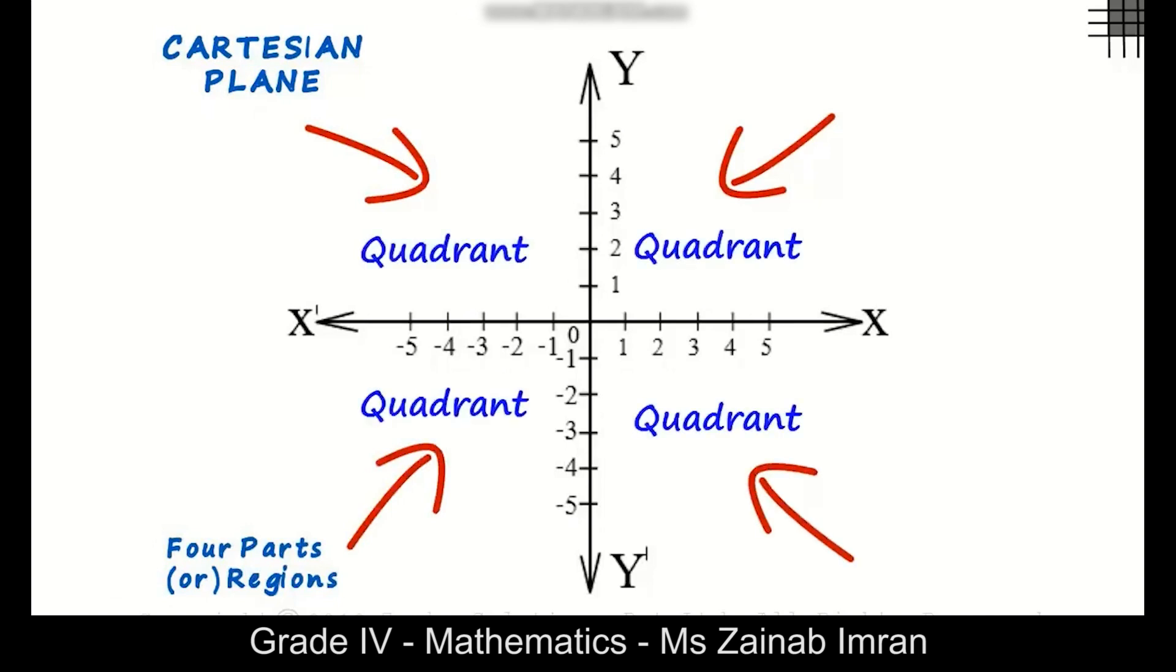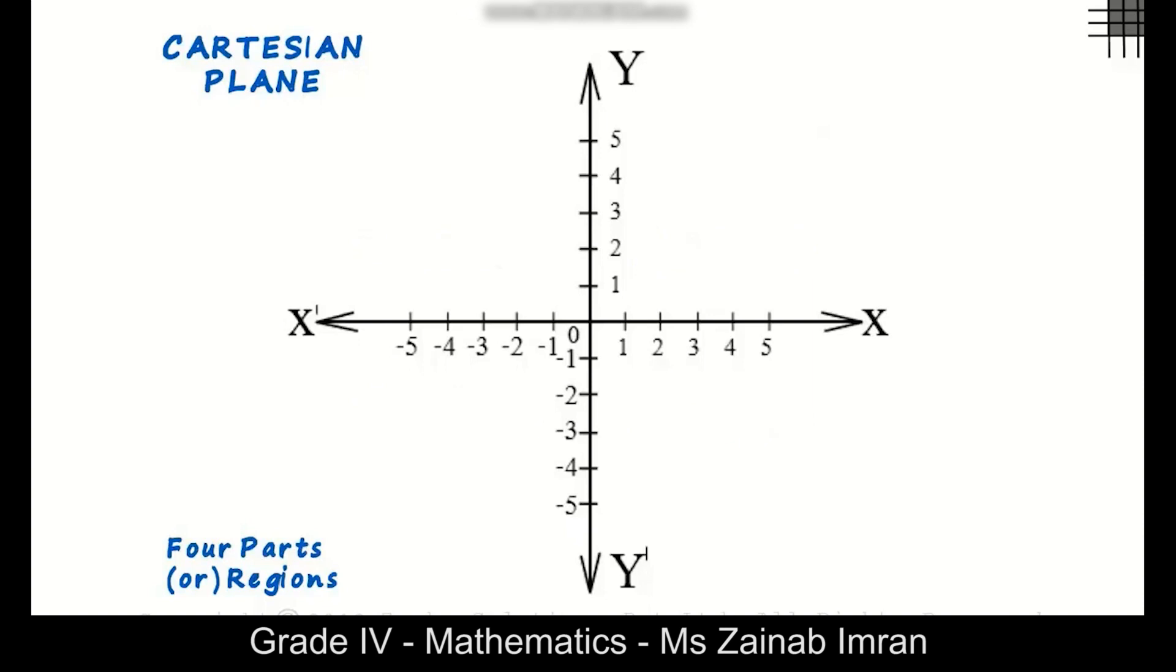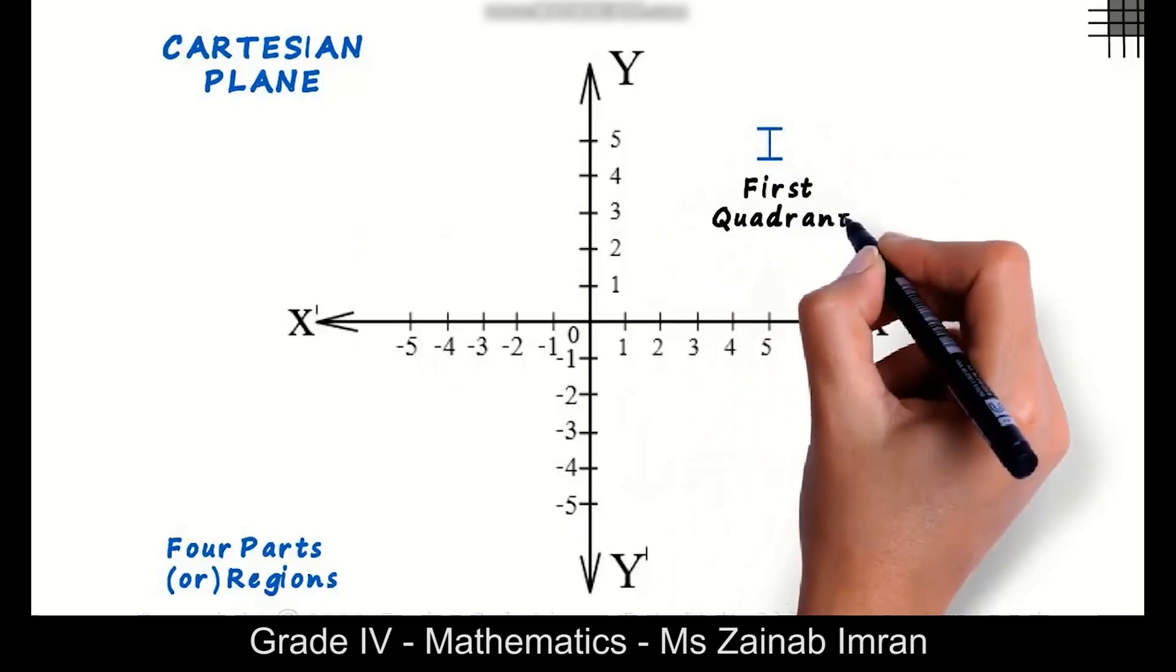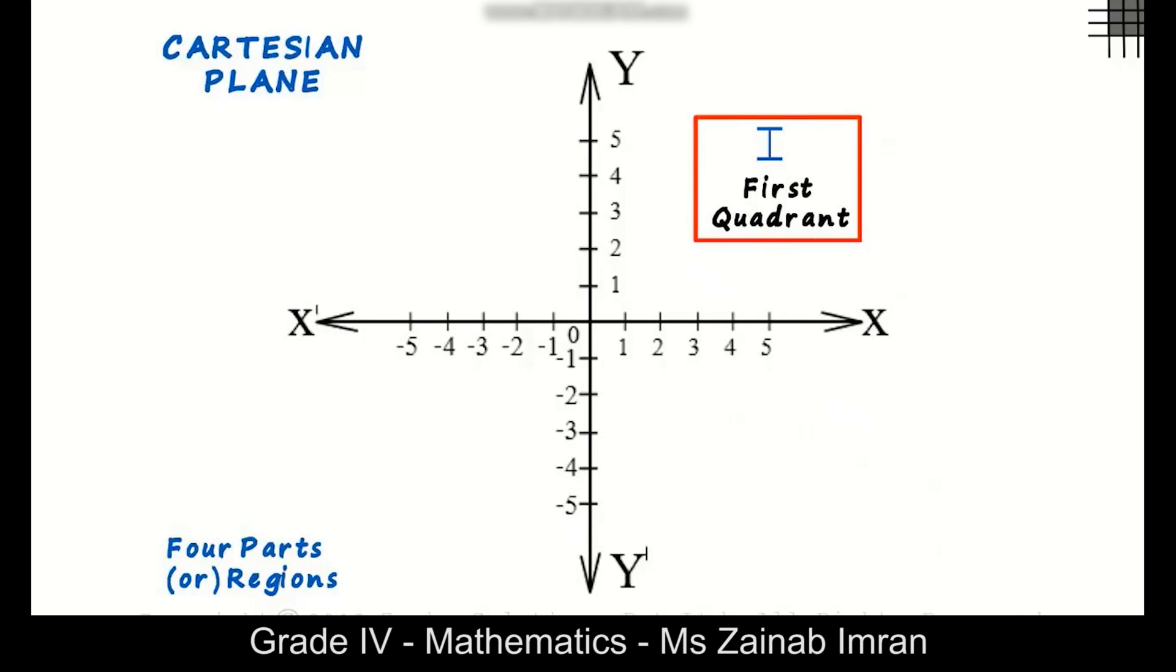Each of them is called a quadrant. The quadrants are named in a particular order which we have to strictly follow. This region is the first quadrant. In the first quadrant, the x as well as the y coordinates are positive.